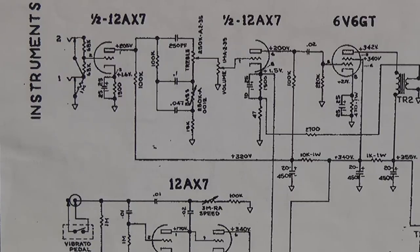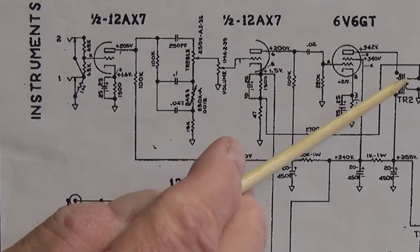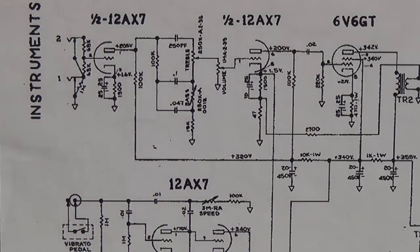And let's remember that a tremolo is variation of volume and vibrato is variation of frequency. This is strictly a volume alteration in the output of the amp, and therefore it is truly a tremolo effect.